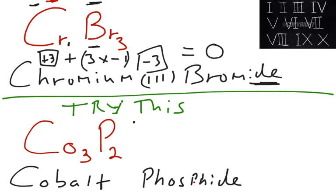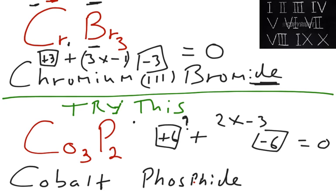So once again, two times negative three will give us negative six. Now, what plus negative six gives us zero? Positive six. Now, the thing is, the positive six goes for these three cobalts. So if three cobalts are positive six, the value for one of them will be positive six over three, which is two. So once again, you've got three cobalts giving you positive six. The value for one of them would be two. So you put a Roman numeral two right there, and that's your answer: cobalt two phosphide.